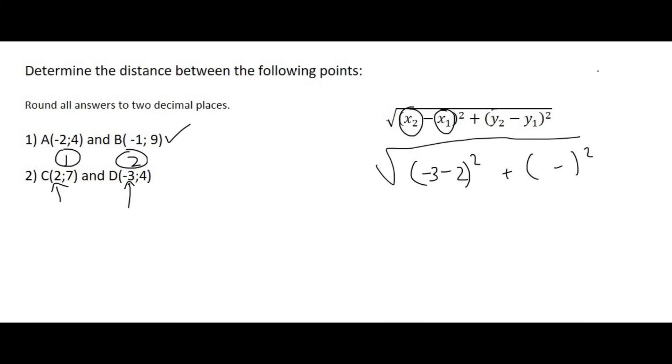Then it's the y value of point number two, which is the four. And then it's the y value of point number one, which is a seven. Then you go type all of this on the calculator. And that's going to give you, to two decimal places, 5.83. So I trust that by now you are fully comfortable with using the distance formula.